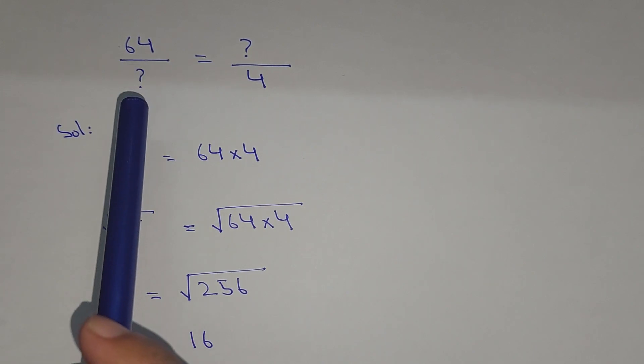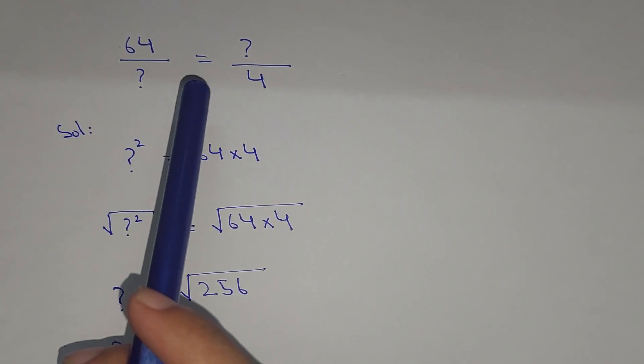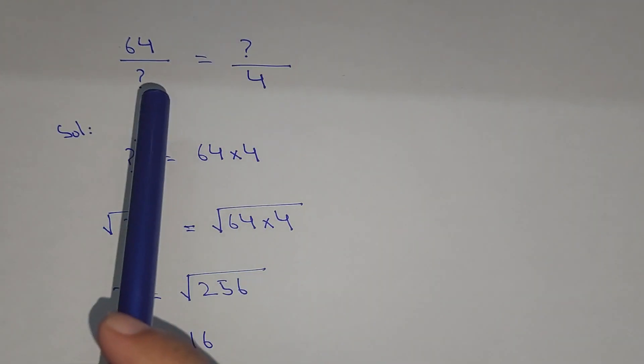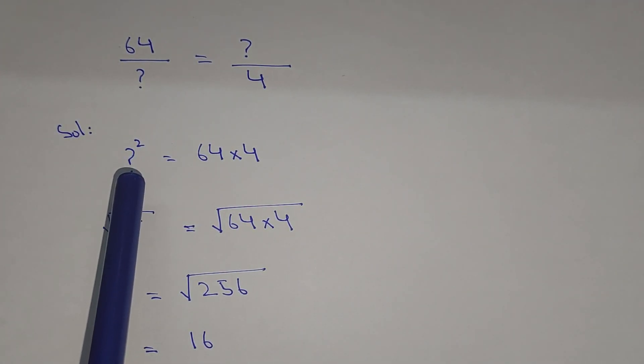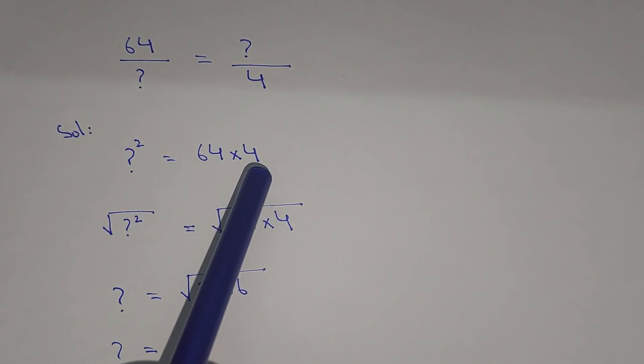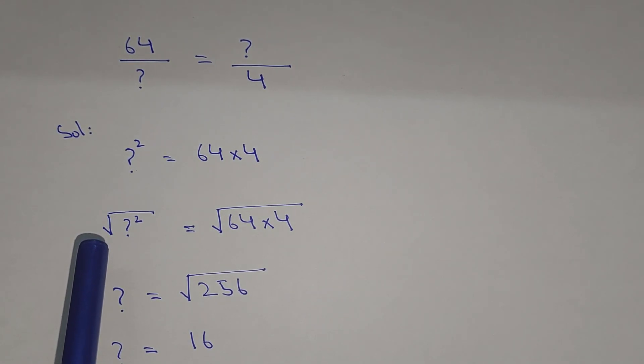So 64 divided by question mark equals question mark divided by 4. Simply cross multiply, so question mark squared equals 64 multiplied by 4. Taking the square root of both sides: square root of question mark squared equals square root of 64 multiplied by 4.